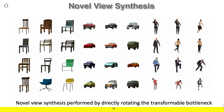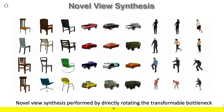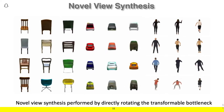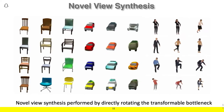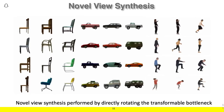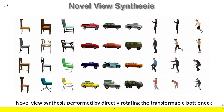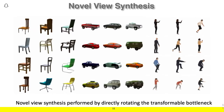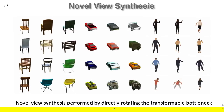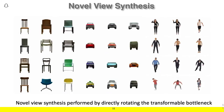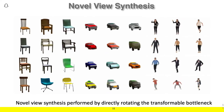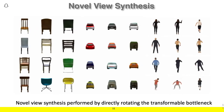Here we present a variety of novel view synthesis results on different object categories. This approach works well for a variety of objects including chairs, cars, and people. Once you've aggregated the input views, we simply compute novel views by applying the corresponding rigid transformation to the target viewpoint. This works well for objects with complex and varying shapes such as chairs, complex textures and materials such as cars with metal and glass, and non-rigid objects such as people.